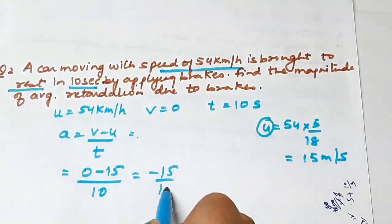Retardation is negative acceleration. That is, if the magnitude of velocity is decreasing with time, then we say the object is retarded. In that case, the final velocity will be less than the initial velocity.